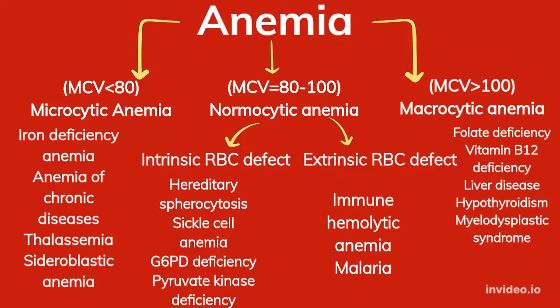When mean corpuscular volume is less than 80 cubic micrometers, that means you have microcytic anemia. This means the size of RBCs present in the blood is smaller than the normal RBC size. The causes of microcytic anemia are iron deficiency anemia, anemia of chronic diseases, thalassemia, sideroblastic anemia, and lead poisoning.